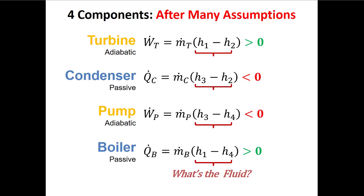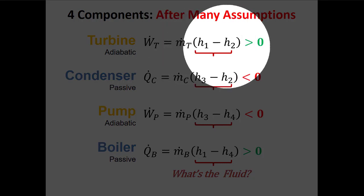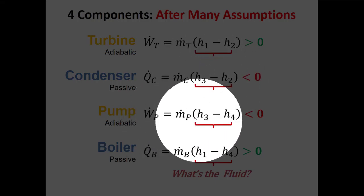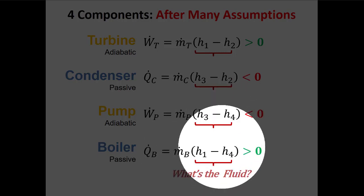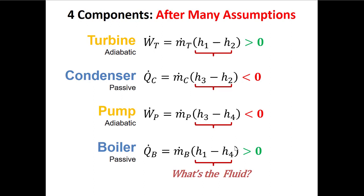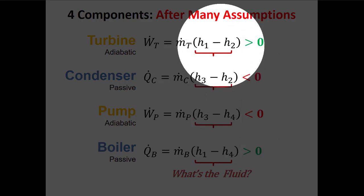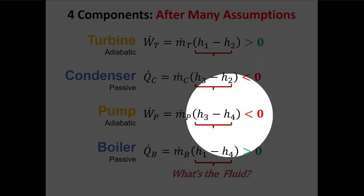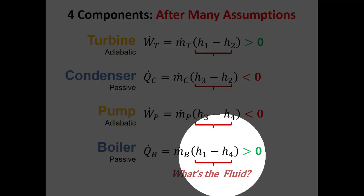With these simplifying assumptions, the symbolic equations are: turbine power = ṁ(h_in − h_out); condenser heat = ṁ(h_out − h_in); pump power = ṁ(h_in − h_out); and boiler heat = ṁ(h_out − h_in). The turbine generates positive power, the condenser rejects negative heat, the pump requires negative work in, and the boiler adds positive heat. Always derive these from the first law and use the sign convention 'hip to win.'